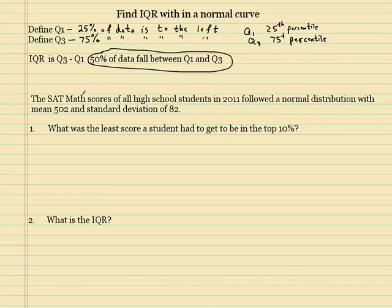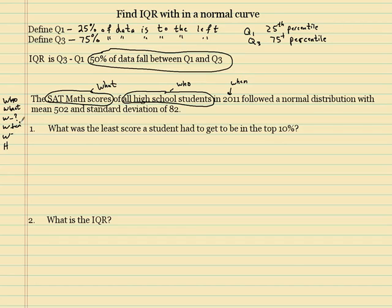And something that I wasn't doing too much in the last videos was describing my context at the beginning of the problem, which is my W's. So the first one, who am I interested in? The who here is all high school students. And the what? What are we interested in these students? Their SAT math scores. Where I don't know. When was in 2011.